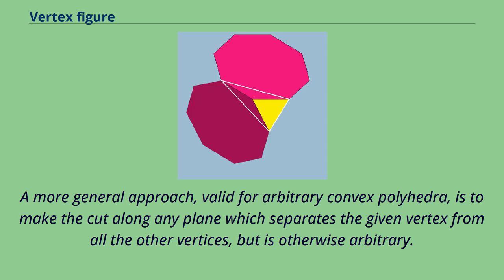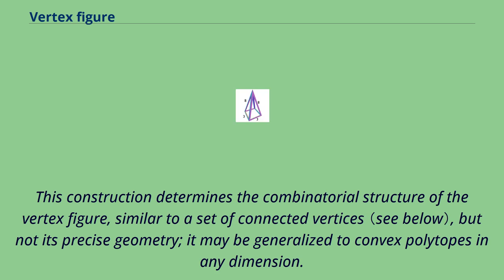A more general approach, valid for arbitrary convex polyhedra, is to make the cut along any plane which separates the given vertex from all other vertices, but is otherwise arbitrary. This construction determines the combinatorial structure of the vertex figure, similar to a set of connected vertices, but not its precise geometry. It may be generalized to convex polytopes in any dimension.